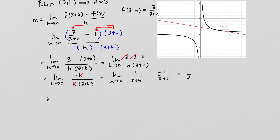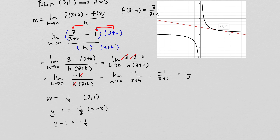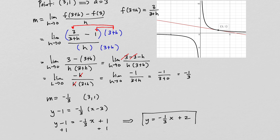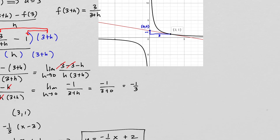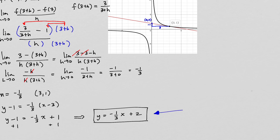Using slope negative 1/3 and point (3, 1) in point-slope form gives y minus 1 equals negative 1/3 times (x minus 3). Solving for y, we get y equals negative 1/3 x plus 2. You can verify this is correct because the tangent line has a y-intercept of 2, which is visible on the graph, and slope of negative 1/3.